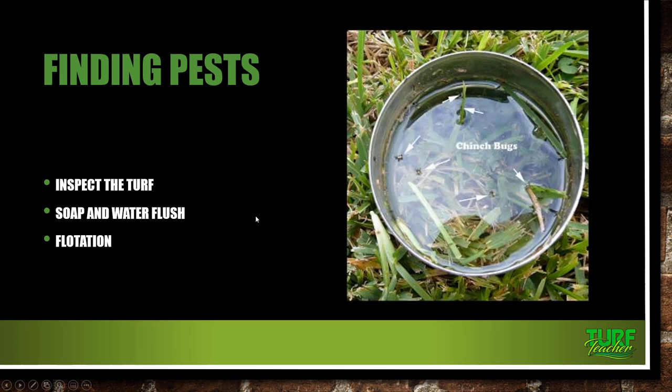Different ways to find them. We have the soap and water flush and the flotation method. Here, we have a can for collecting chinch bugs — the flotation device where we take a coffee can, cut the bottom off, stick it down into the ground, fill it full of water, and the chinch bugs float up to the top. There's also a soap and water flush for mole crickets, armyworms, and caterpillars — putting about two ounces of dishwashing detergent in four gallons of water and pouring it in a square yard of turf where we suspect these insects are. They'll be irritated by the detergent and come to the surface so we can count them and determine our threshold.